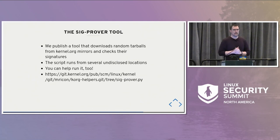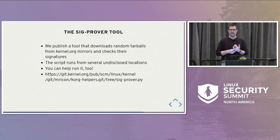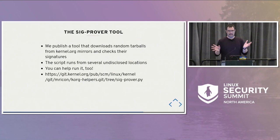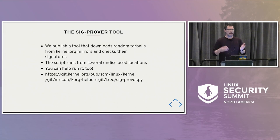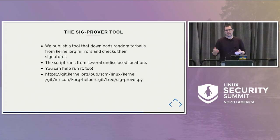We also have a SIG-prover tool that we publish. It runs in the background as a job, downloading random tarballs from kernel.org from a number of mirrors, verifying the signatures, and immediately sending an alert if something nefarious is found. There's a link to the code. You can help run it too — I run it in a couple of my own locations. Obviously this protects against others, not against me. If you want to help protect against me doing nefarious things, please also run this tool somewhere — and don't tell me about it.